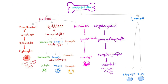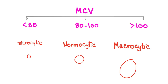Here is your hematopoiesis slide: multipotent stem cell → myeloid → lymphoid. The RBCs come from the myeloid lineage. MCV always determines if the anemia is microcytic, normocytic, or macrocytic, because MCV depends on the size of the red blood cell. We're talking about hemolytic anemia, which is usually normocytic anemia, with a normal MCV ranging between 80 and 100.